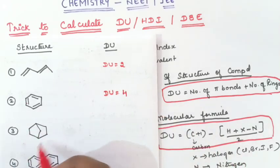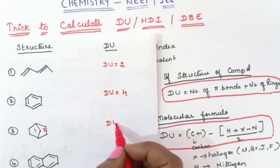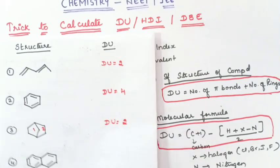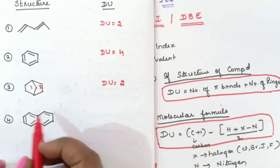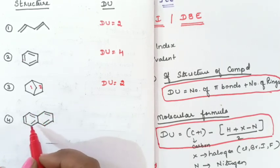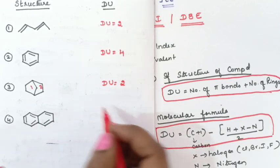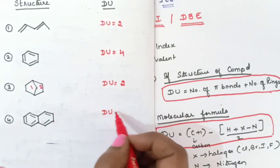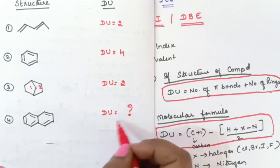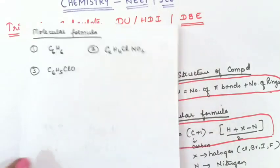The third example is a bicyclo compound. In bicyclo compounds there are two rings, so DU = 2. The fourth example is naphthalene — students, I want you to calculate DU for naphthalene. Count the number of pi bonds plus number of rings and write your answer in the comment box.